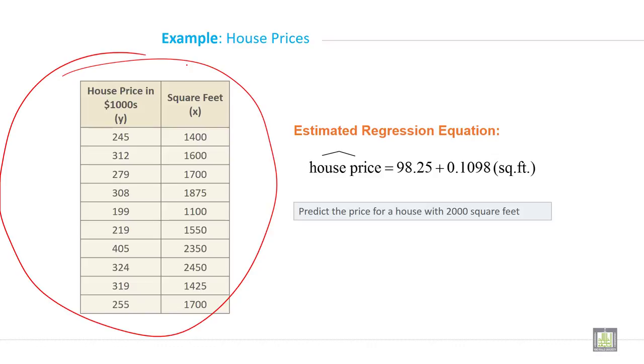Now, the estimated regression equation as you know is this. Predict the price for a house with 2000 square feet. For example, suppose this is the question.